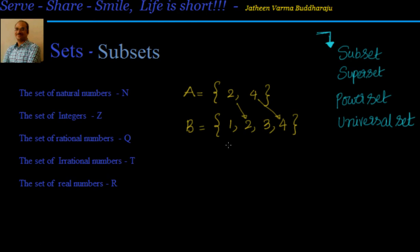So if each element of a set is present in another set, then that particular set is called a subset. Then A is called as subset of B and it is represented by A subset of B. If it is not subset then we will say A is not subset of B.